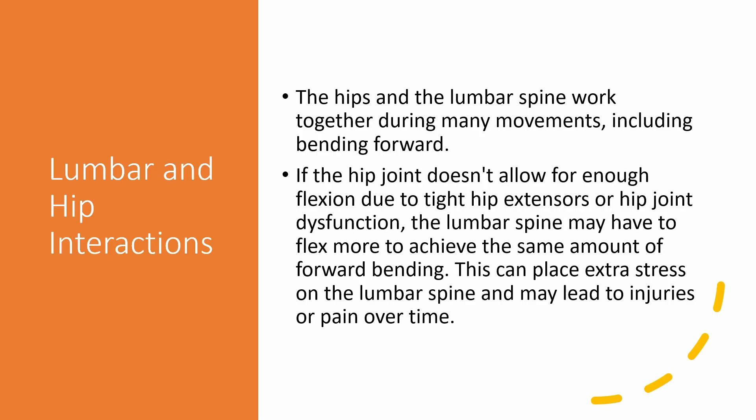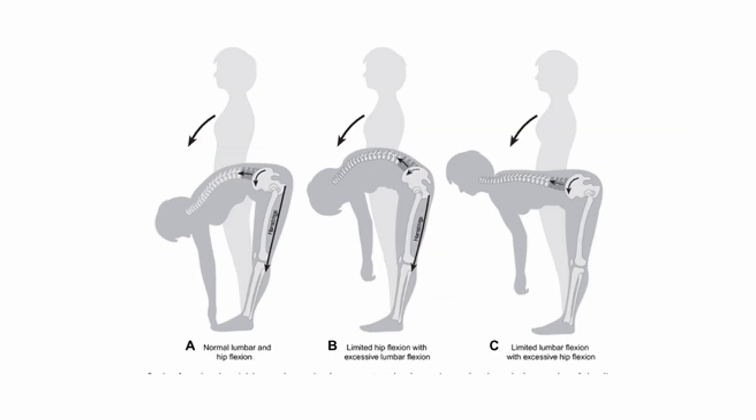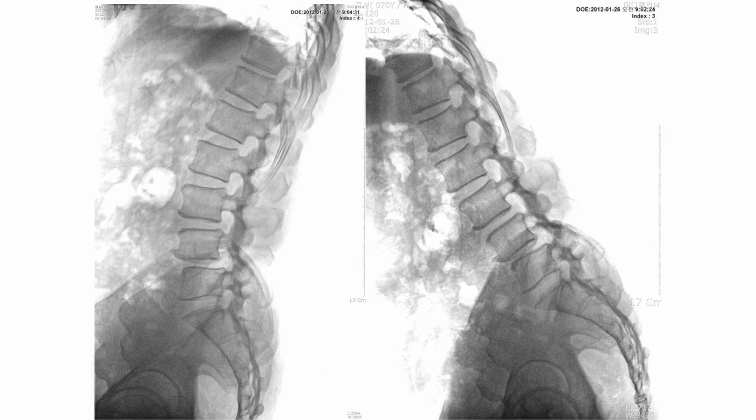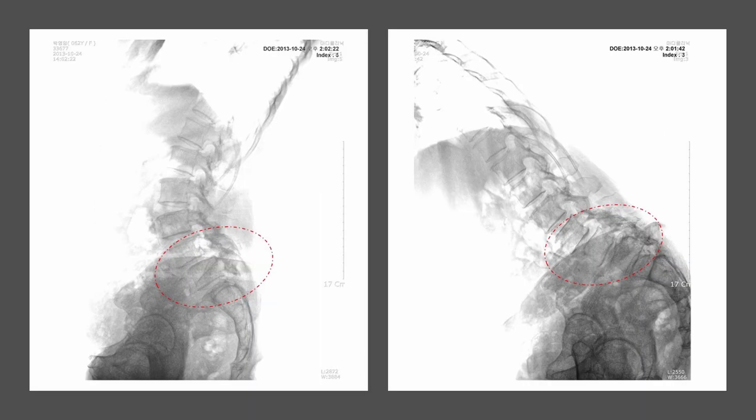Considering the connection between the hips and the lumbar spine, which work together during many movements like bending forward, if the hip joint doesn't allow for enough flexion due to tight hip extensors or hip joint dysfunction, the lumbar spine might have to flex more to achieve the same amount of forward bending. This compensation can result in additional stress on the lumbar spine and might lead to injuries or pain over time.